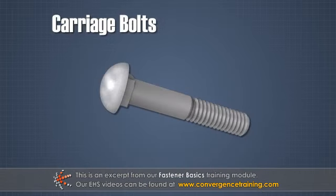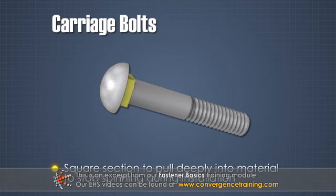Carriage bolts, which have smooth, rounded heads with a square section to pull deeply into the material to stop any spinning during installation.